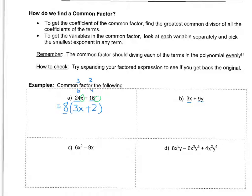For the next example with 3x + 9y: the number parts 3 and 9 share a common factor of 3. The first term has x but the second doesn't, and the second has y but the first doesn't, so no variable is common. The common factor is 3, giving 3(x + 3y). For the following example with 6x² − 9x: 6 and 9 share a factor of 3, and both terms have x — the smallest power is x¹ — so the common factor is 3x. Then 6x² ÷ 3x = 2x and 9x ÷ 3x = 3, giving 3x(2x − 3).